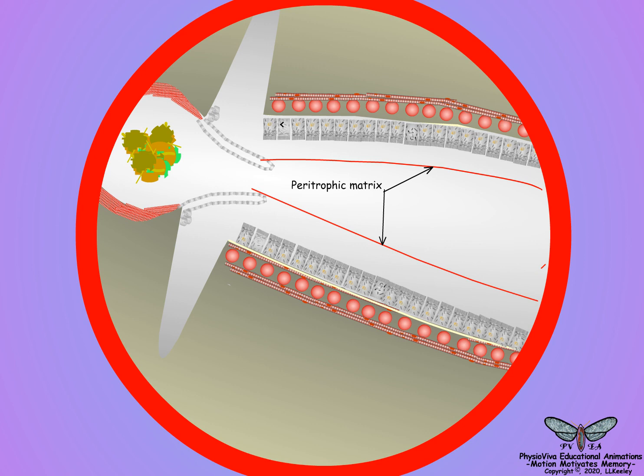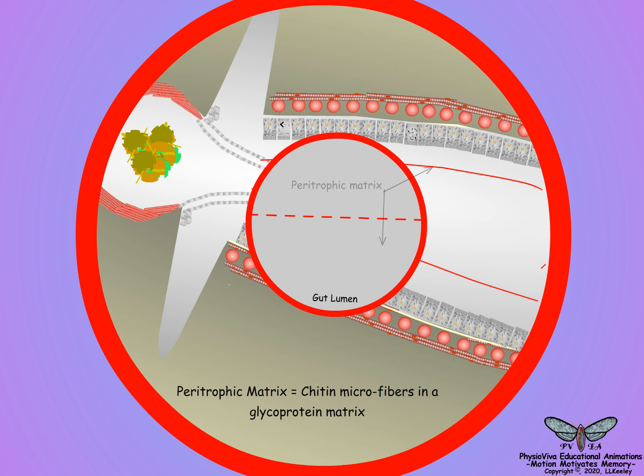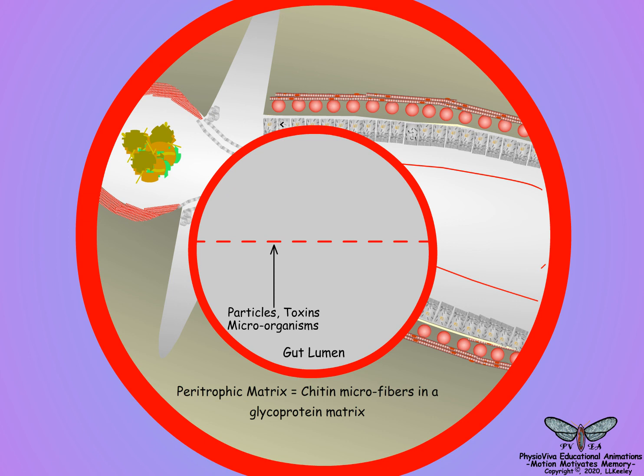The peritrophic matrix consists of an organized lattice of chitin microfibers embedded in a glycoprotein matrix that creates a molecular sieve. The peritrophic matrix acts as an ultrafilter that protects midgut cells from mechanical and chemical damage and from infection by microorganisms. Yet the matrix is porous and allows enzymes to diffuse into the midgut lumen and digested nutrients to diffuse out.